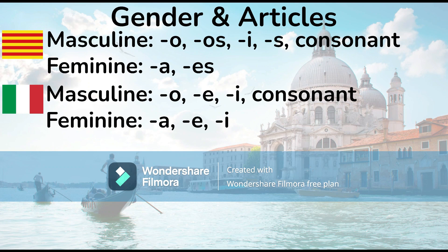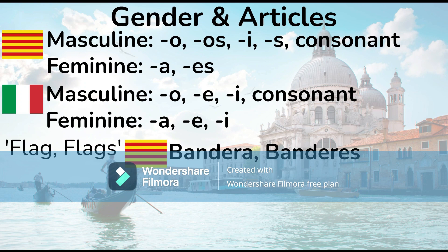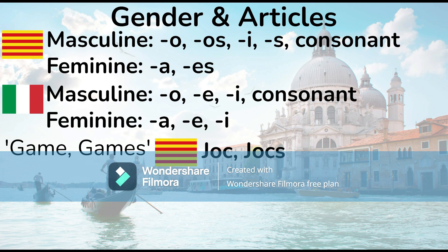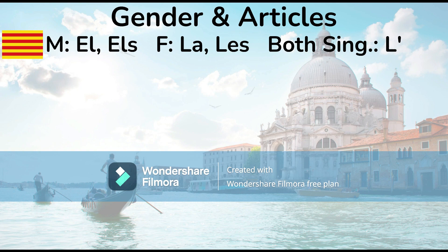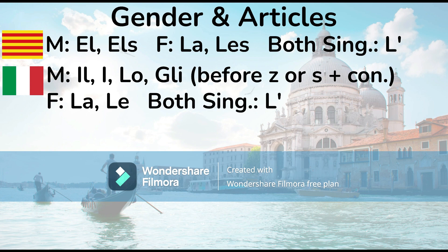For example, the pair of words for flag and flags: 'bandera,' 'banderes' in Catalan, and 'bandiera,' 'bandiere' in Italian. In Catalan, the definite articles are 'el' and 'els' for masculine, 'la' and 'les' for feminine, and for singular words that start with a vowel or H it's l'apostrophe. In Italian, they're 'il' and 'lo' for the singular masculine, 'i' and 'gli' before Z or S plus a consonant for the plural, and for the feminine it's 'la' and 'le' respectively. Also for words that start with H or a vowel, it's l'apostrophe as well.